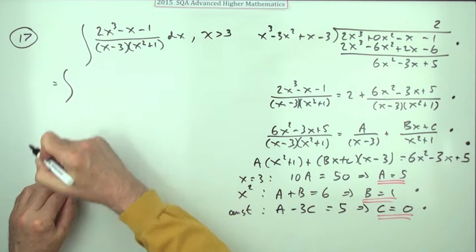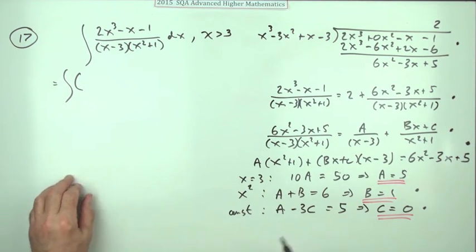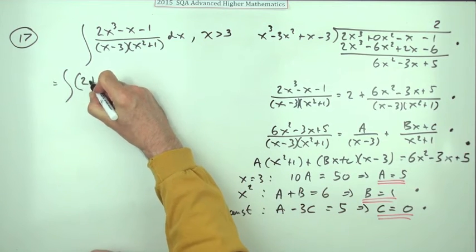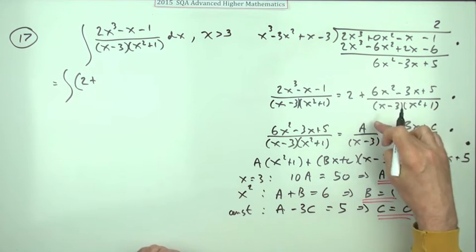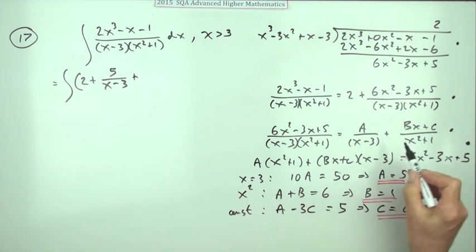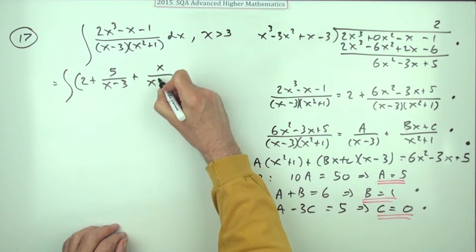Now it's just a case of popping this back in. What that says is instead of this rational expression, I've got this expression here, which is 2 + A was 5, so it's 5 over (x - 3), and for the Bx + C I've just got x over (x² + 1).